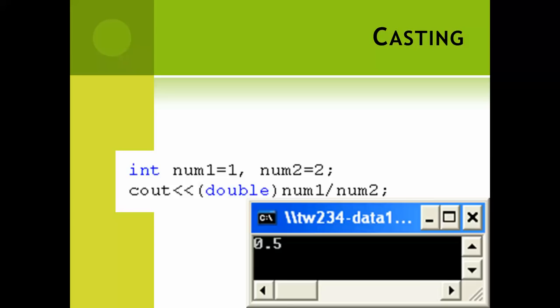I can take care of that when I have variables by doing this thing called casting. All I have to do is go in front of one of those two operands, in this case it's num1, and I wrap the name of the type I want it to become in parentheses in front of it. So here I put in front of num1 the word double in parentheses. And that will force the answer to come out like this, 0.5.